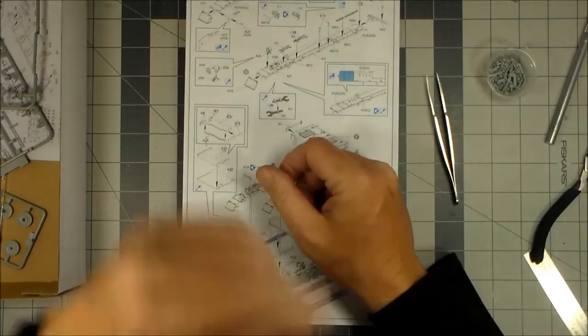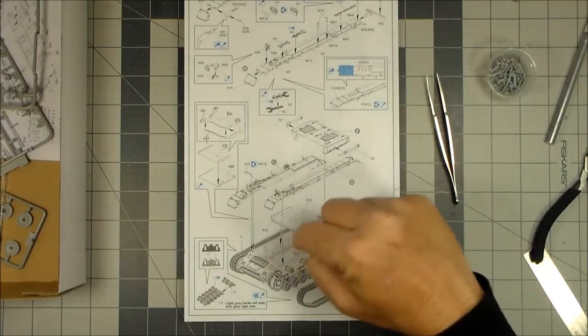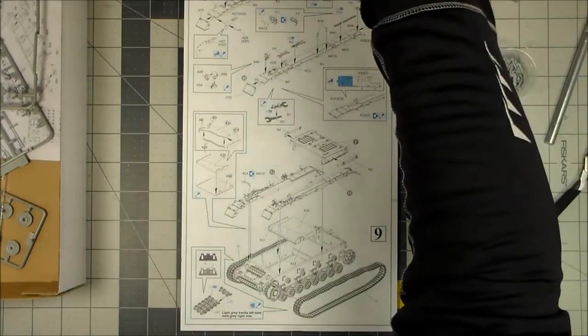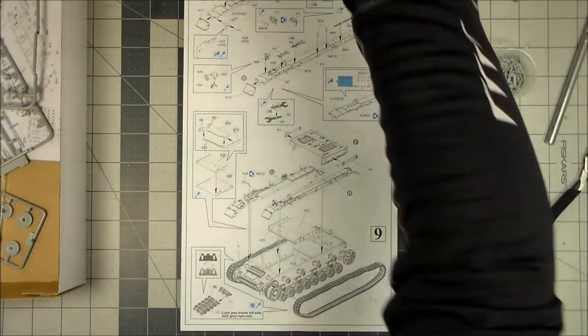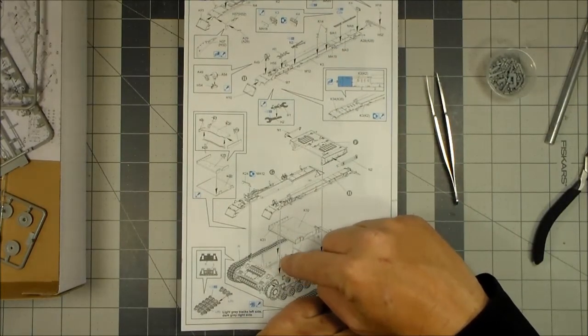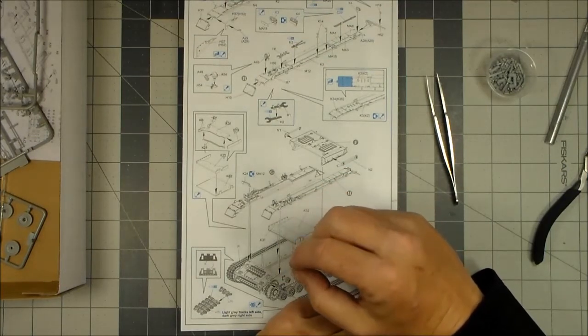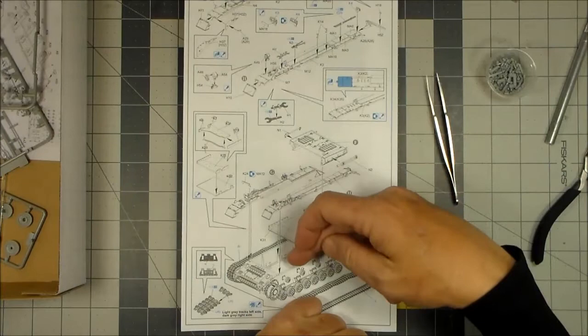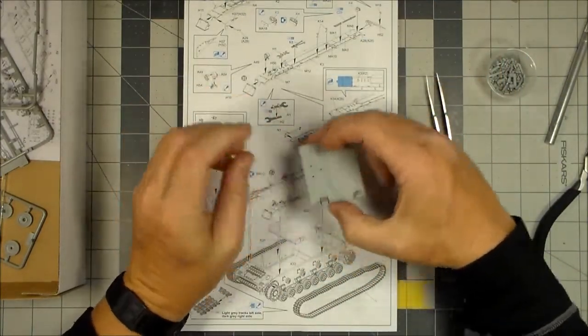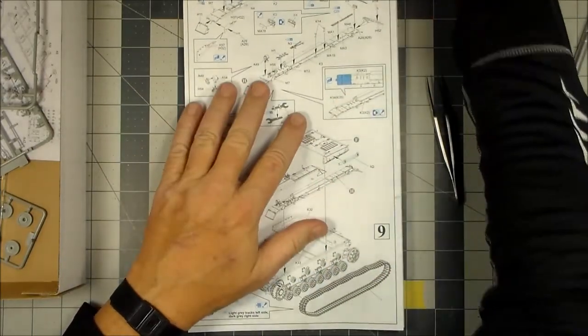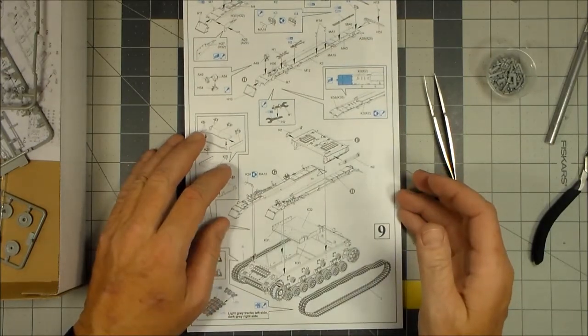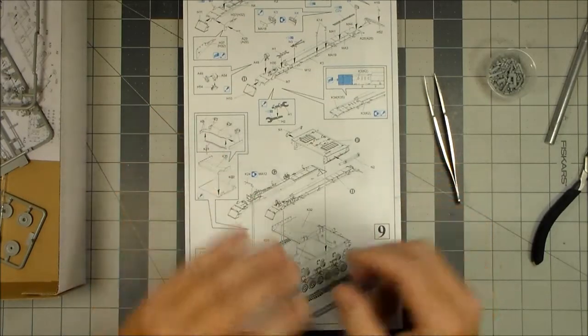Now, one thing I want to make a note about, stuff like this is different in Dragon kits compared to, say, Tamiya or Academy. This floor plate, there is no definite spot where that floor plate goes. It's not like there's pins, or line-up marks, or anything like that. It just shows it dropping in there. And, as you can see on the bottom, it's just perfectly flat. So, that's why I'm not putting this stuff together until I can start test-fitting some stuff and make sure it assembles correctly.